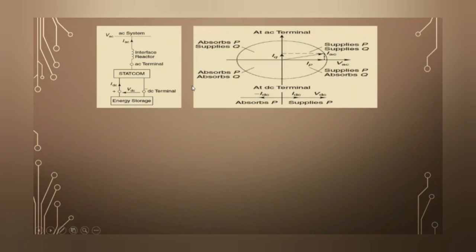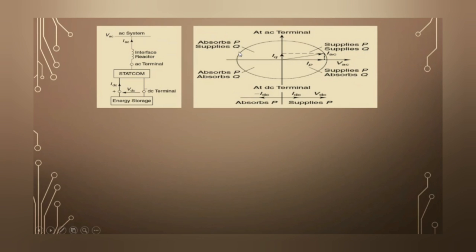This is the basic four-quadrant diagram. In the first quadrant, supply voltage and AC current are in phase, so it supplies both reactive and active power. In the second quadrant, it supplies reactive power but absorbs active power. In the third quadrant, it absorbs both reactive and real power. In the fourth quadrant, it absorbs reactive power and supplies active power.